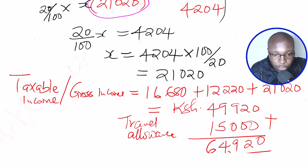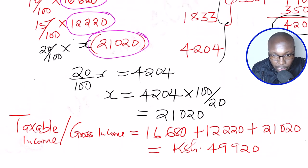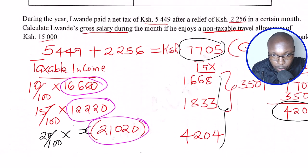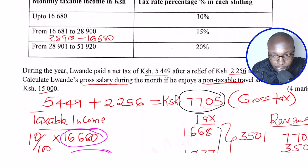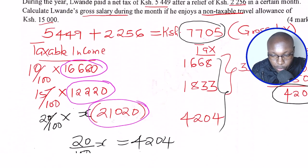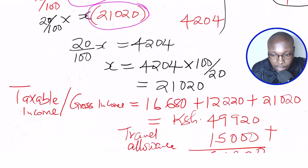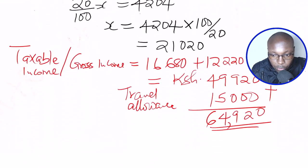Therefore, the gross income will be 49,920 plus 15,000, which gives 64,920. The gross income is 64,920 Kenyan shillings.